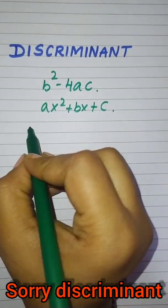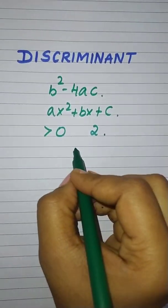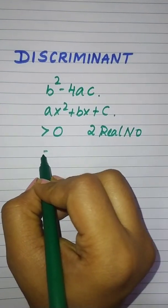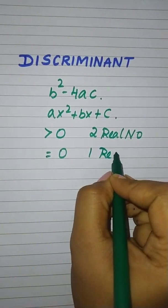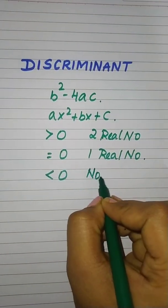Now if the discriminant is greater than 0, then it will have 2 real roots. If the discriminant is equal to 0, then it will have 1 real root. And if the discriminant is less than 0, then it will have no real numbers.